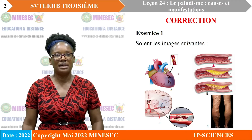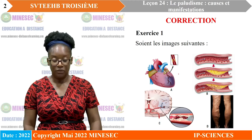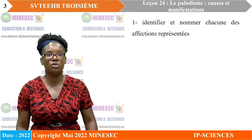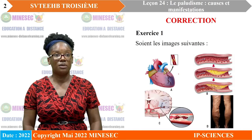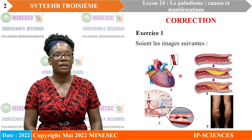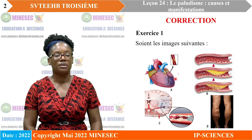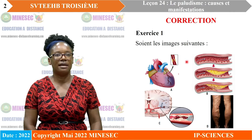Exercice 1 : soit les images suivantes que nous observons à l'écran. On nous demande d'identifier et nommer chacune des affections présentées. Sur le document, nous avons le A : on voit un cœur dont une partie est affectée, n'est plus irriguée, car l'artère est bloquée. Il s'agit donc de l'infarctus du myocarde.